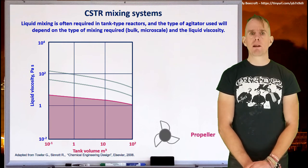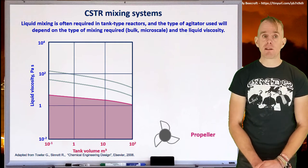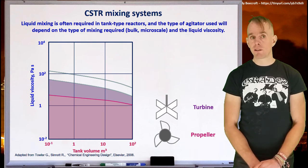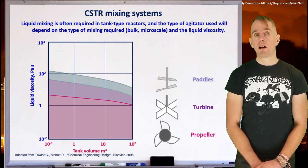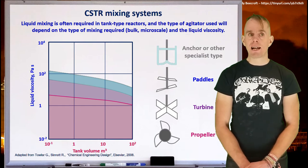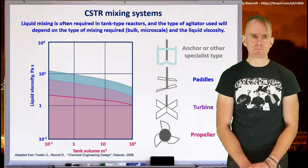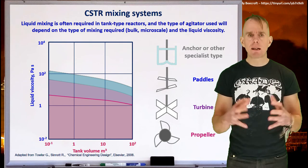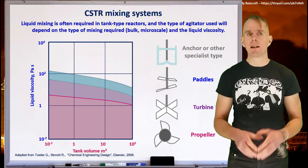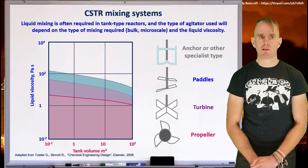And what this allows you to do is to match the appropriate agitation technology, in this case, to your tank volume and your fluid mechanics of your liquid system. So for example, there'll be ranges where you might specify a propeller type agitator, viscosity ranges and volumes where you might specify a turbine type agitator, a paddle type agitator, or something slightly more specialist like an anchor or maybe even a disc plate type reacting system. And so getting a very clear idea about what each of these mixing systems entails is again another very important element of how you start to evolve your mechanical design of your process.